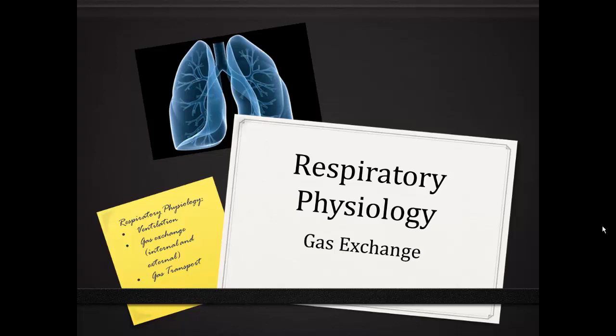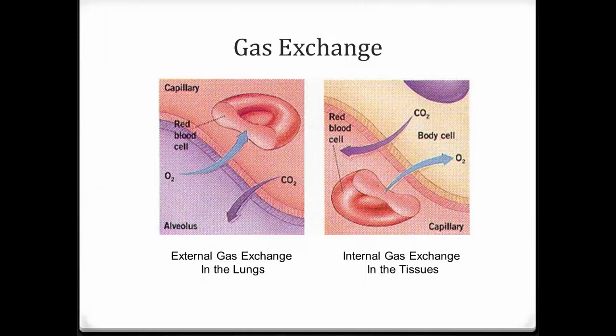In this video lecture, we're going to look at the next step in respiratory physiology and that's gas exchange. Since we've got the air into our lungs through ventilation, now we've got to think about how we're going to get the oxygen across into the blood and get the CO2 out. We also want to think about gas exchange in terms of internal gas exchange — moving oxygen from the blood into the tissues — and external gas exchange between the alveoli and the blood.